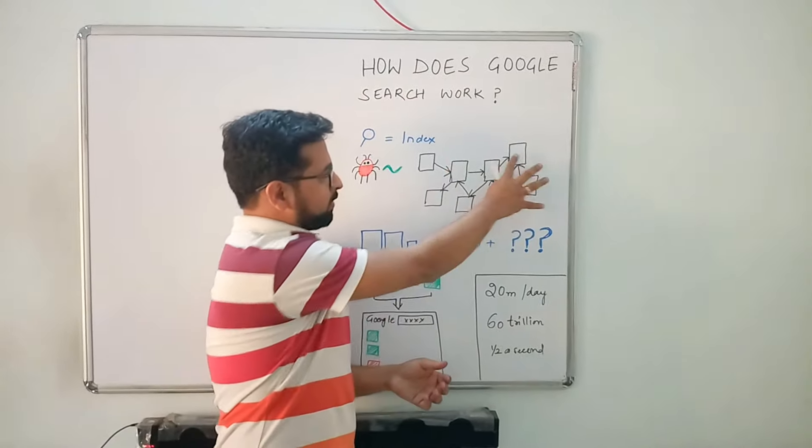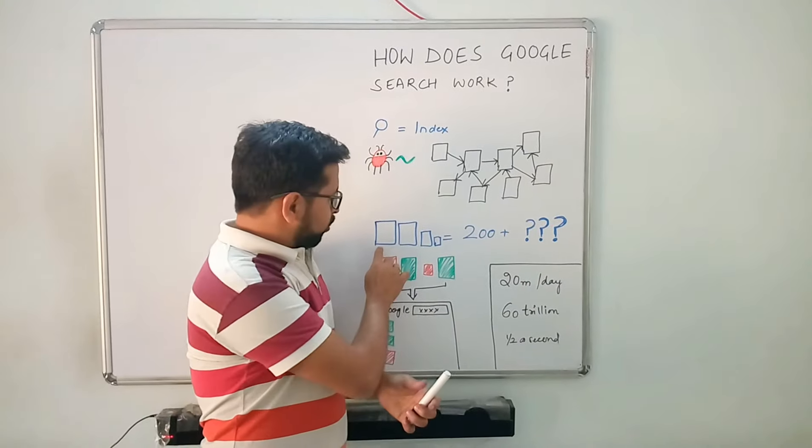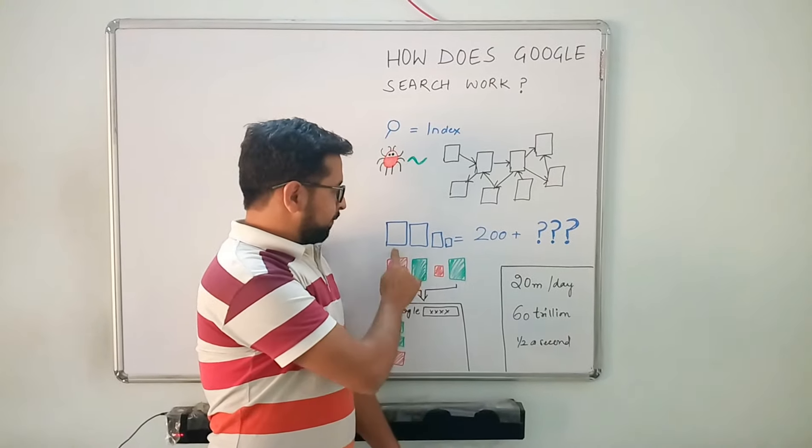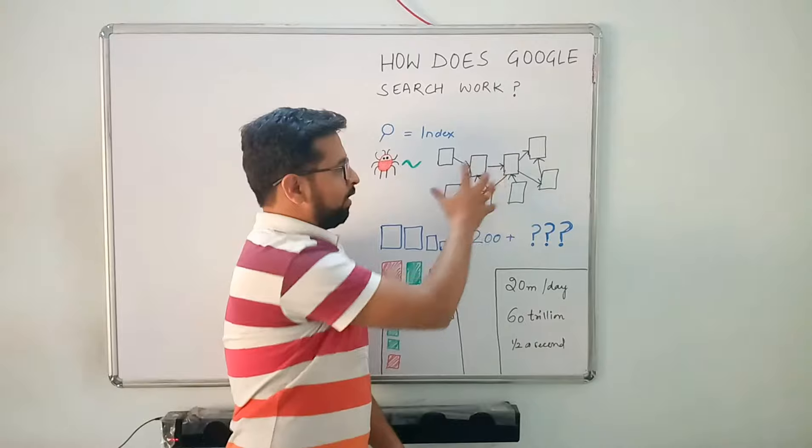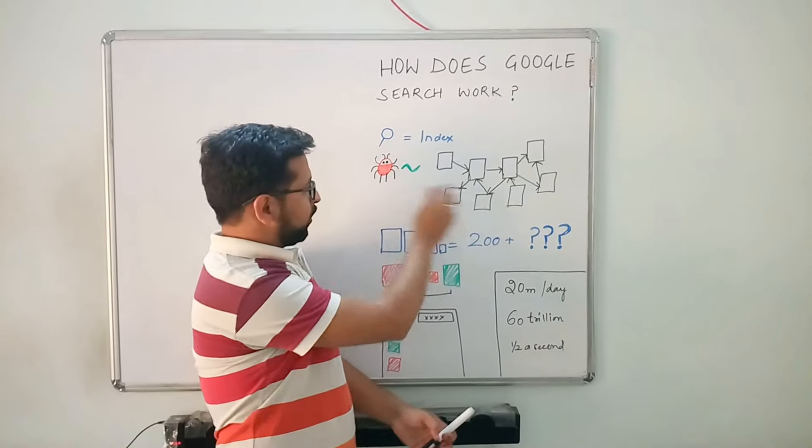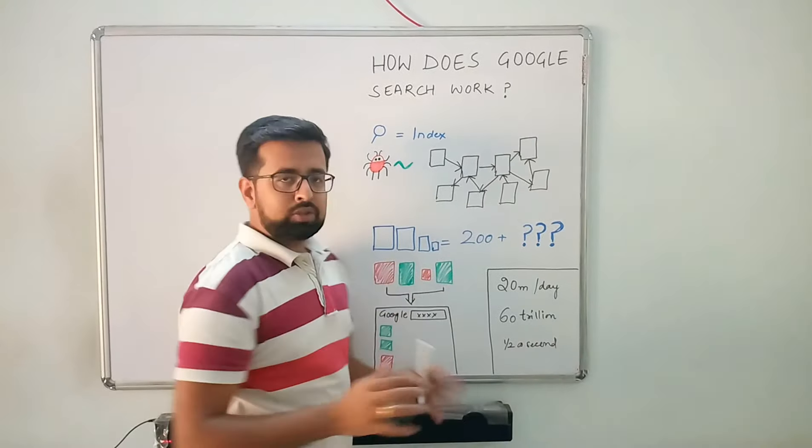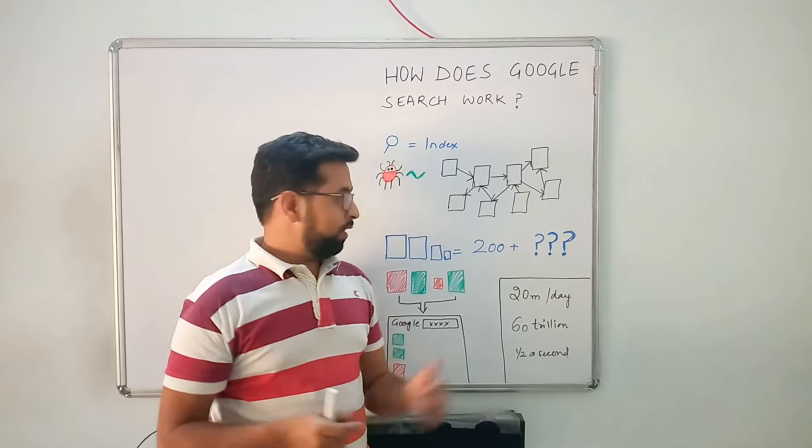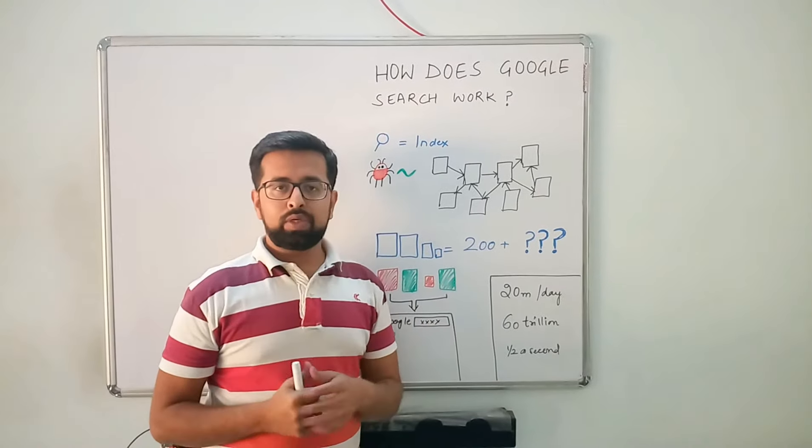After this information is collected and Google has categorized everything it's learned during this process, Google asks questions—more than 200 questions, actually.